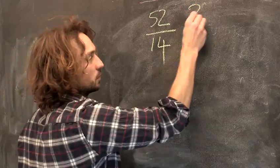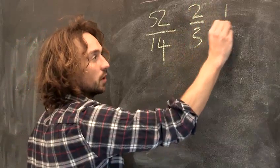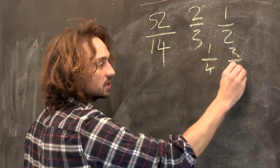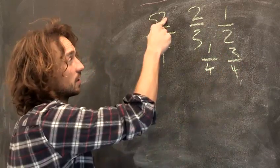A more common fraction would be something like 2 thirds or 1 half or 1 quarter, 3 quarters, etc. Fractions are one thing over another.